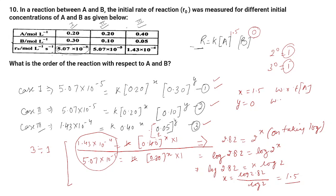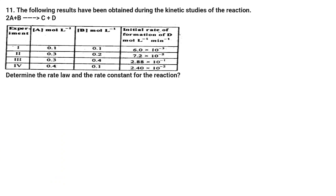So the answer for question 4.10 is: x = 1.5 with respect to concentration of A, and y = 0 with respect to concentration of B. Now let us move to question number 4.11. The question states: the following results have been obtained during the kinetic studies of the reaction 2A + B → C + D.